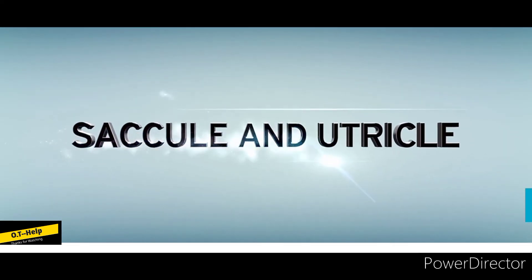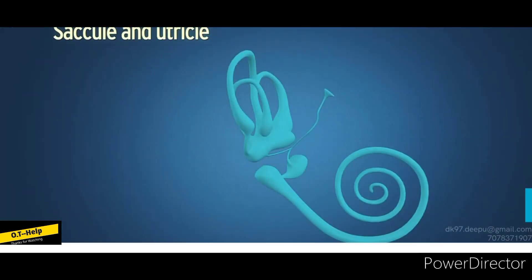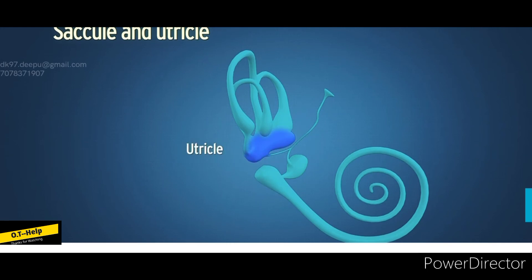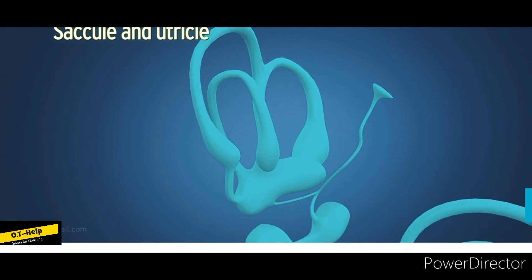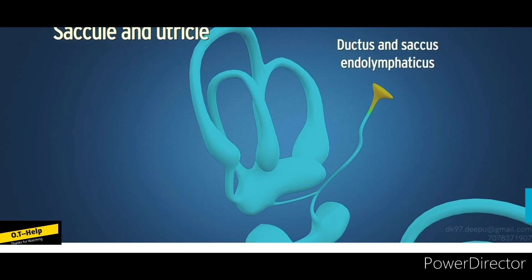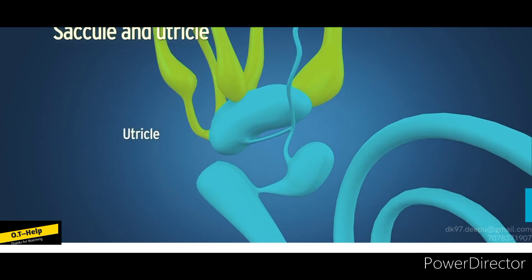The saccule is a small globular membranous sac present in the antero-inferior part of the vestibule. The utricle is larger than the saccule. The saccule is connected with the cochlear duct through the ductus reuniens. The saccule and utricle are connected to each other by the Y-shaped utriculosaccular duct, which expands to form the ductus endolymphaticus and saccus endolymphaticus. The utricle receives the openings of the three semicircular ducts through five openings.